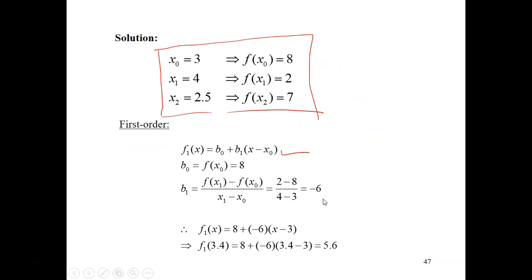Let's look at the first order interpolation. This will be our formula. B0 is just simply fx0, which is 8. And B1, we have to calculate using this formula. So fx1 is 2, fx0 is 8, x1 is 4, and x0 is 3. So 4 minus 3. You get B1 as negative 6.